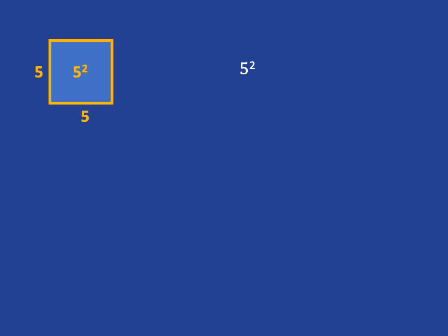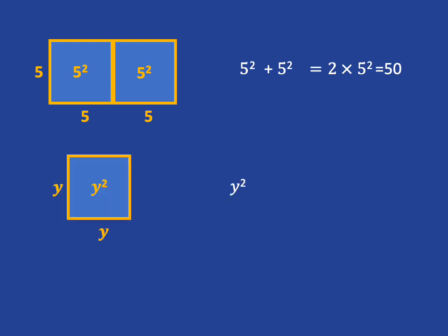It would be no problem if you had 5 squared, for example, plus 5 squared, then that total area there you can see you've just got the 5 squared which is 25, another 5 squared, 25. In total you've got two lots of 25 which is 50, so two lots of 5 squared. So that's going to be the same story.